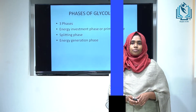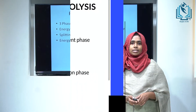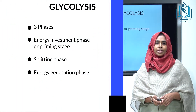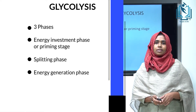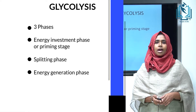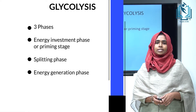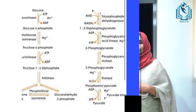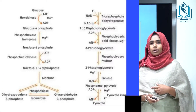The steps of glycolysis are divided into three main phases: the first phase is the energy investment phase or priming stage; the second is the splitting phase; and the third is the energy generation phase. The pathway contains 10 steps involving 10 enzymes, converting one molecule of glucose into two molecules of pyruvate.